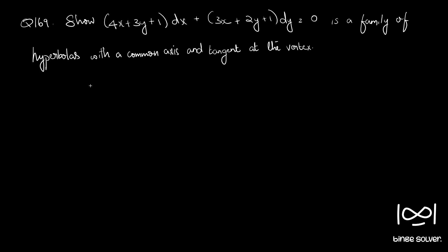The given equation is in the form M dx plus N dy equals 0. First we check whether the given equation is exact by using the necessary and sufficient condition: dou M by dou y equal to dou N by dou x.